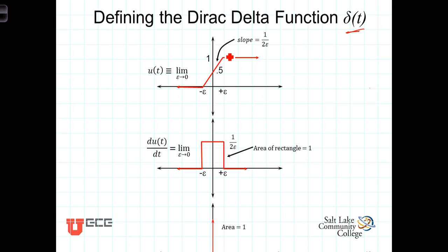You'll recall the slope of the straight line was one over two epsilon, so in that interval, the derivative is a constant, the slope is constant in there, and so the height of this pulse is one over two epsilon.